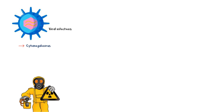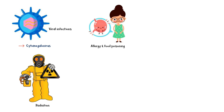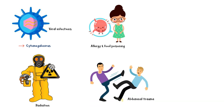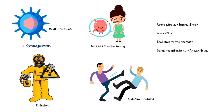Additionally, radiation, allergy, food poisoning, and abdominal trauma can also cause acute gastritis. Other causes include acute stress such as burns and shock, bile reflux into the stomach, ischemia to the stomach, and parasitic infections such as anisakiasis, which is associated with the consumption of raw or undercooked fish.